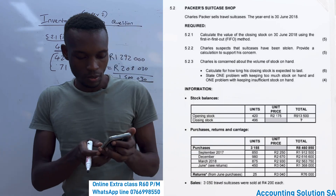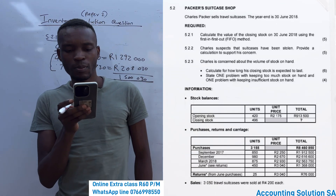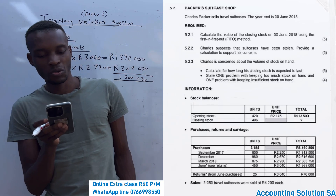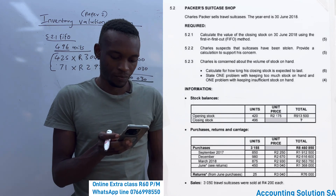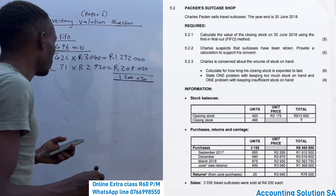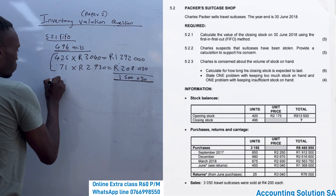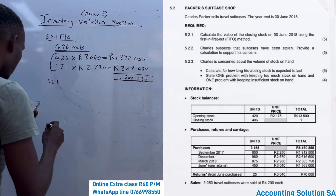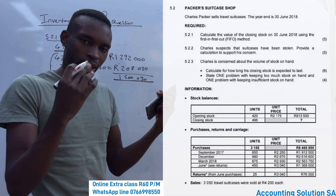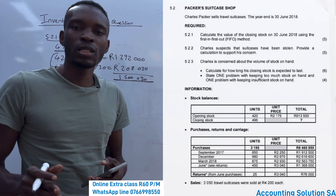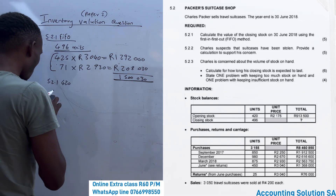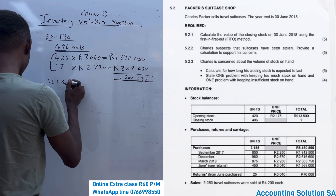The second question says Charlie suspects that a suitcase has been stolen — provide a calculation to support his concern. To calculate stolen goods, it is very simple. For 5.2.1, stolen goods: you start with opening stock of 420, meaning we add all inventory we know we have, then subtract what we know was sold, what is still on hand, and what was returned.